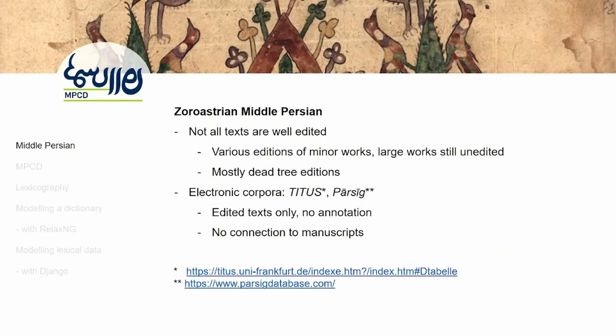The current situation with Zoroastrian Middle Persian is that not all texts are well edited. A small portion of texts most interesting to Zoroastrian religion scholars have been edited many times over, but some of the large encyclopedic and moral texts have not been edited. There are only two electronic corpora of Middle Persian texts: Titus and Parseek. Both exclusively rely on printed editions — basically just transcriptions of the printed edition, with no annotation, and they ignore any connection to actual manuscripts. This is a problem because people usually just work with editions and ignore the manuscript tradition, which can be very different.